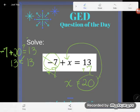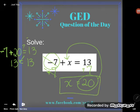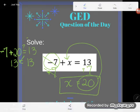So indeed, X is equal to 20. Great. If you have any questions about this or any other GED math topic, be sure to drop it in the comments and I'll do my best to answer it.